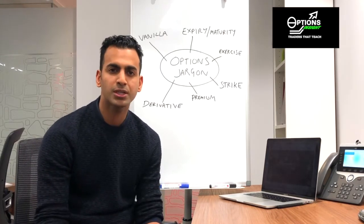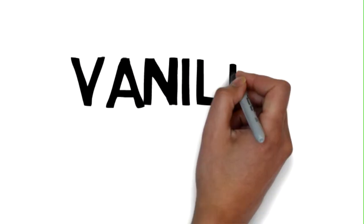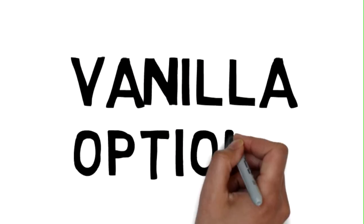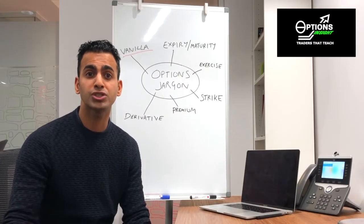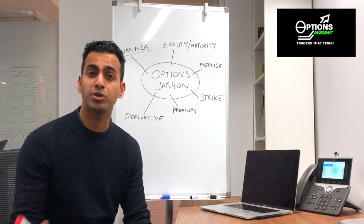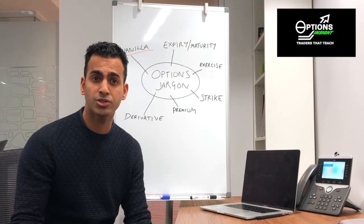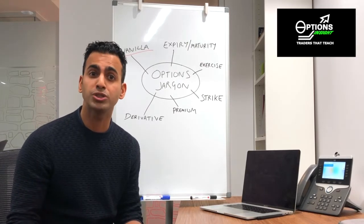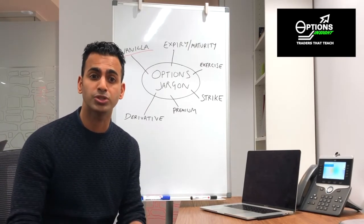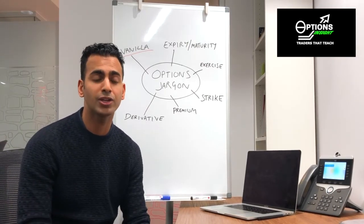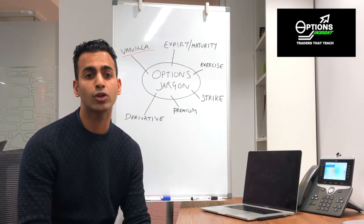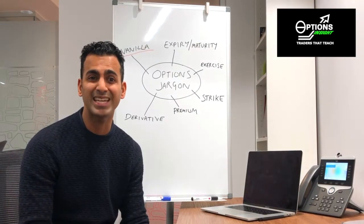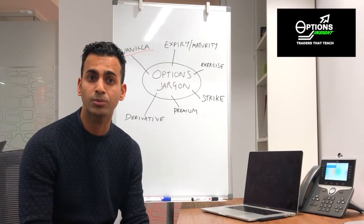The first thing I'm going to talk about is vanilla. Vanilla options are just basic options — calls and puts, as described in previous videos. They are the most basic types of options. They're usually commoditized, they trade on exchanges, and they're easy to get prices and liquidity for.